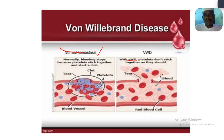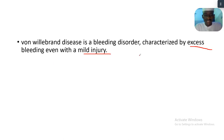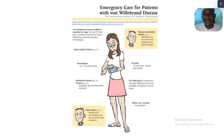Von Willebrand disease is a serious medical condition characterized by very slow blood clotting — your blood doesn't clot as quickly as it should. It is a bleeding disorder where even a small wound causes more bleeding than expected. With a very small cut on your skin, you could bleed to death if the wound isn't stitched up quickly enough.